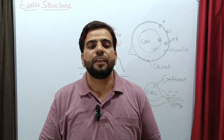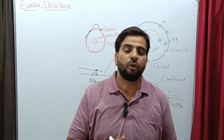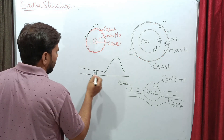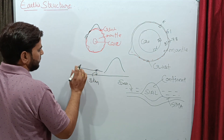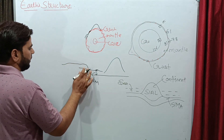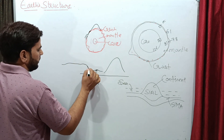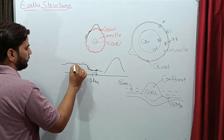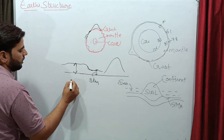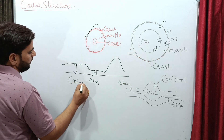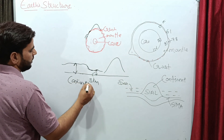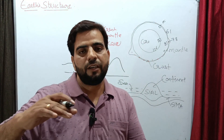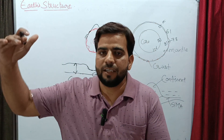The thickness of the crust below the ocean is five kilometers, and below the continent it is nearly 30 kilometers. So for normal land — the continent — the crust thickness is approximately 30 kilometers.